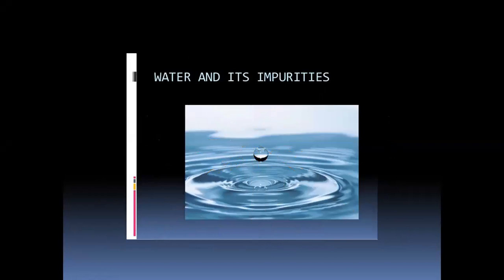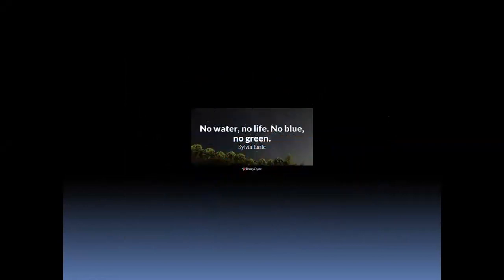Aage, you had impurities of water. Isi chapter mein aage tisra topic hamara aa raha hai — impurities of water, water and its impurities. No water, no life, no blue and no green.